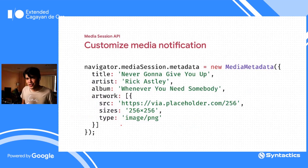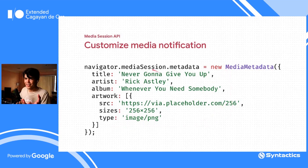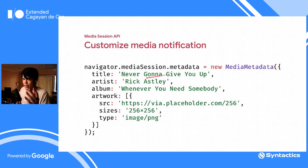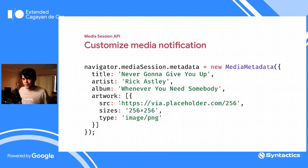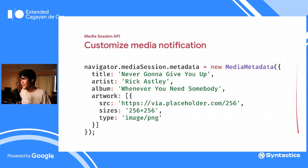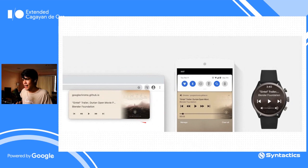To use it, assign a MediaMetadata object to navigator.mediaSession.metadata, defining title, artist, album, and artworks — the image displayed in the notification. That's it — no complex function call, just create a new object and assign it. You're then able to customize the media notification.